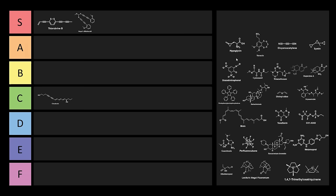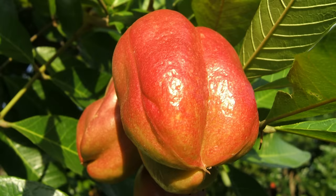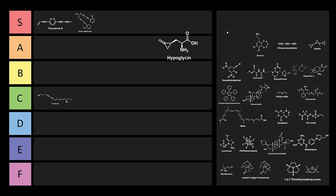Hypoglycin! Hypoglycin A is a naturally occurring amino acid derivative found in the unripened fruit of the ackee tree. This is one which is toxic if it's ingested, and it's the agent that causes Jamaican vomiting sickness.